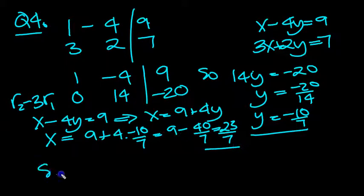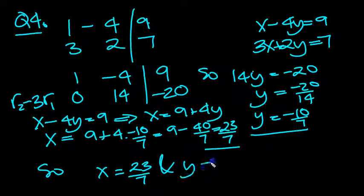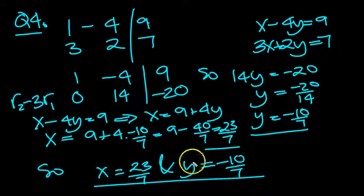There we go. So let's just summarize. x equals 23 over 7 and y equals minus 10 over 7. There we go. There's the answer.